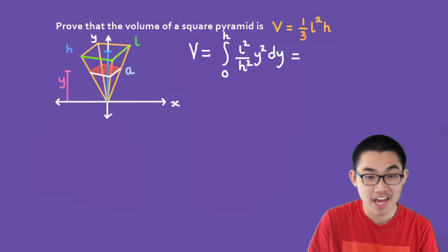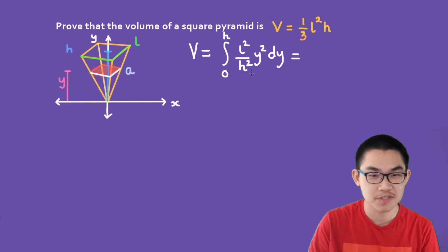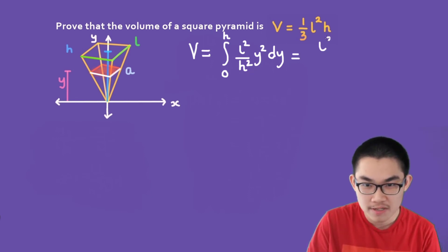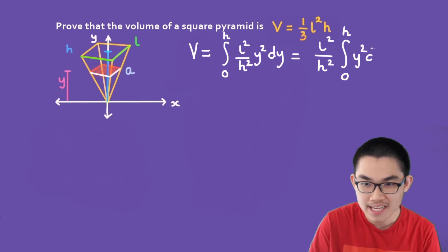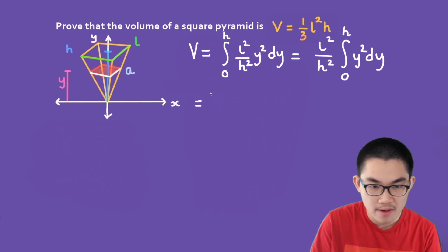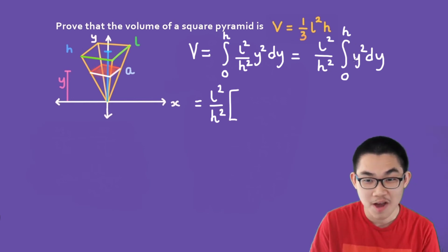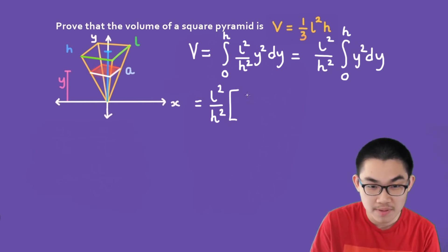L² and H² are constants, so we can move them out of the integral. This gives us L² over H² times the integral from 0 to H of Y² dY. The antiderivative of Y² is 1 over 3 times Y cubed.